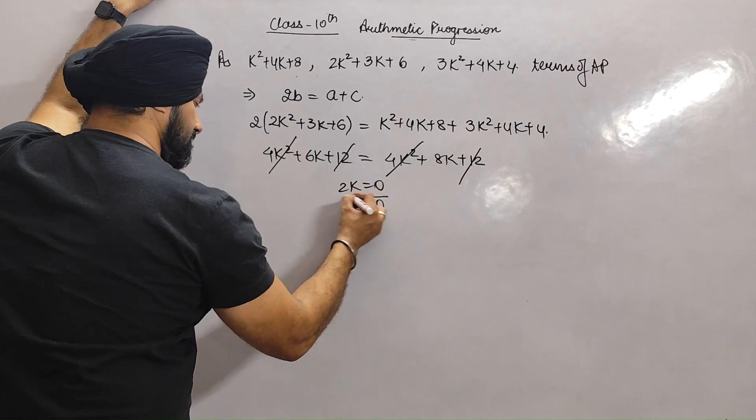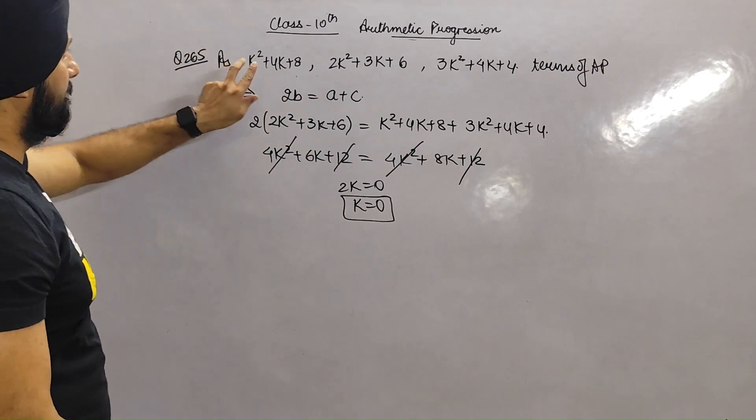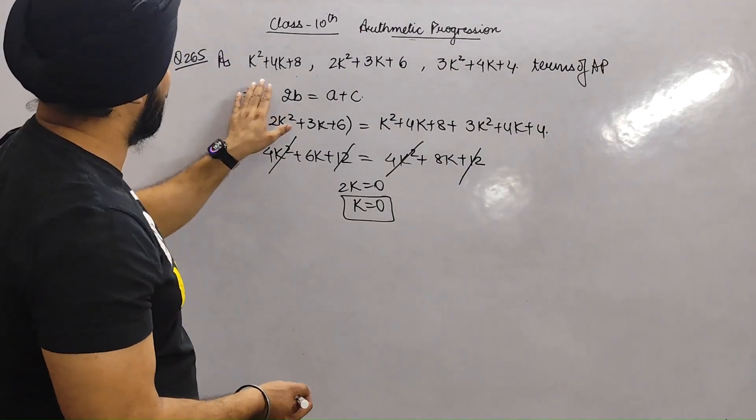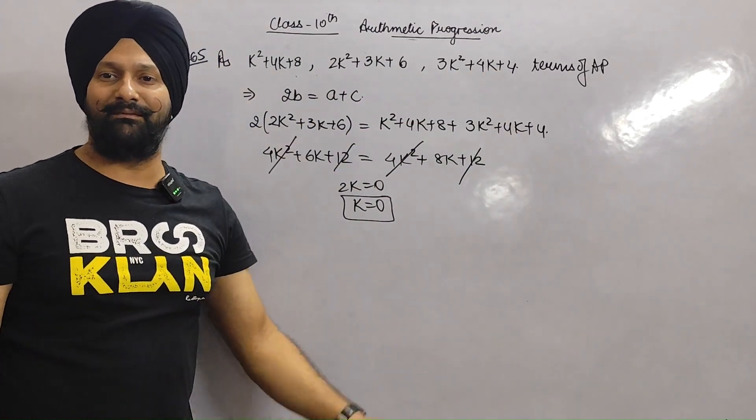Notice, the AP becomes 8, 6, and 4 when K equals zero. AP with terms 8, 6, and 4.